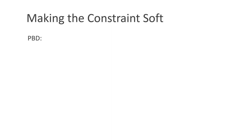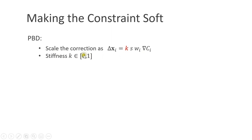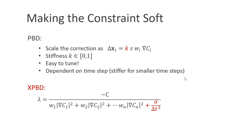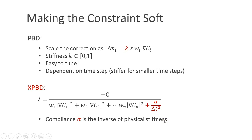So far, we have only looked at hard constraints. What if we want to make a constraint soft, for instance to simulate a soft body? In original position-based dynamics, we simply scaled the correction vectors by a scalar k, a number between 0 and 1. However, the effect of this scaling is dependent on the time step size — constraints become stiffer for smaller time step sizes. We fixed this problem with XPBD, extended position-based dynamics. All we need to do is add a small term to the computation of lambda. Here, alpha is the compliance, which is the inverse of physical stiffness. If we set alpha to 0, we have an infinitely stiff constraint and recover the original position-based dynamics equation.